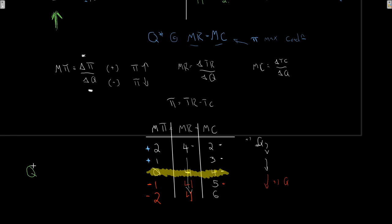To summarize: optimal level of output Q star is where marginal revenue equals marginal cost. The only thing the firm got to choose was Q, and that optimal level of output occurs at the point where MR = MC.